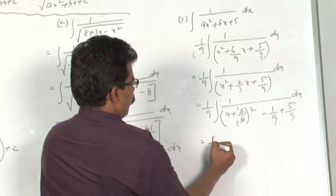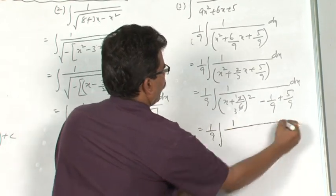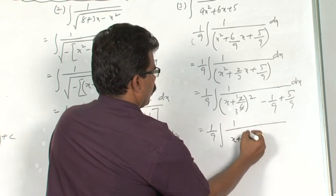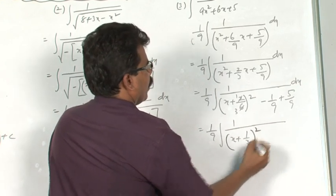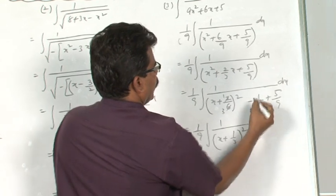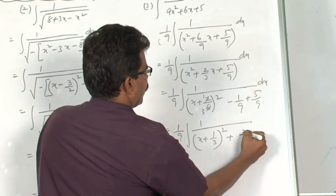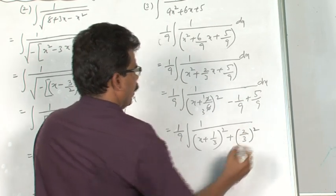Now, if you simplify 1 by 9 integral 1 by, this can be written as x plus 1 by 3 whole square plus this 4 by 9, which can be written as 2 by 3 whole square.